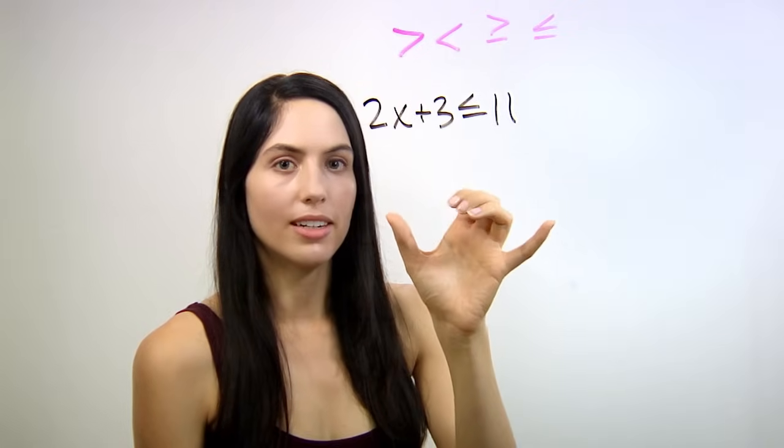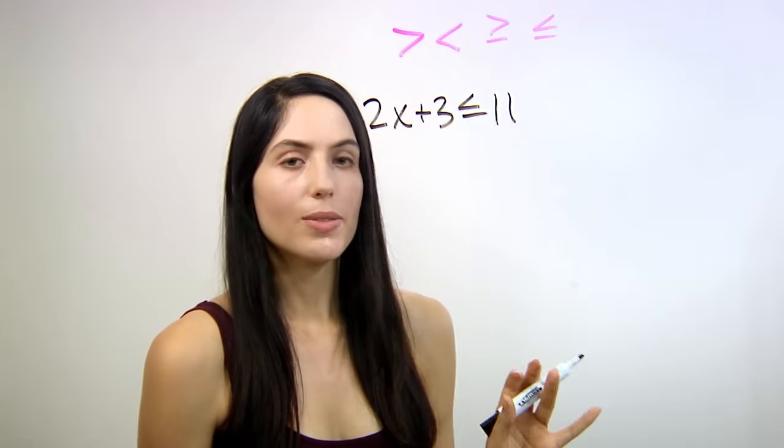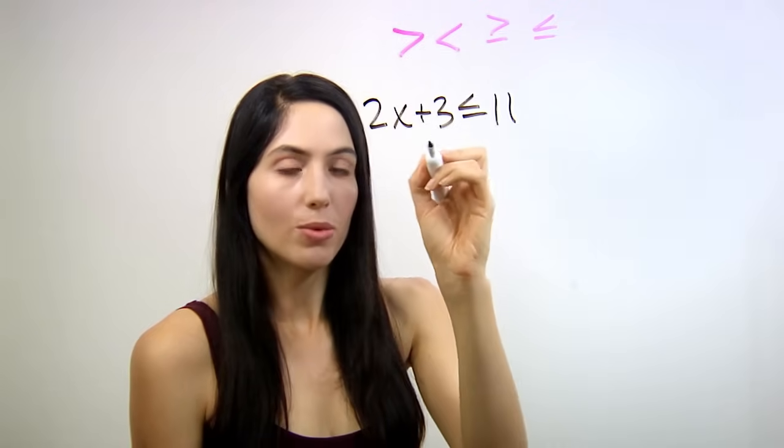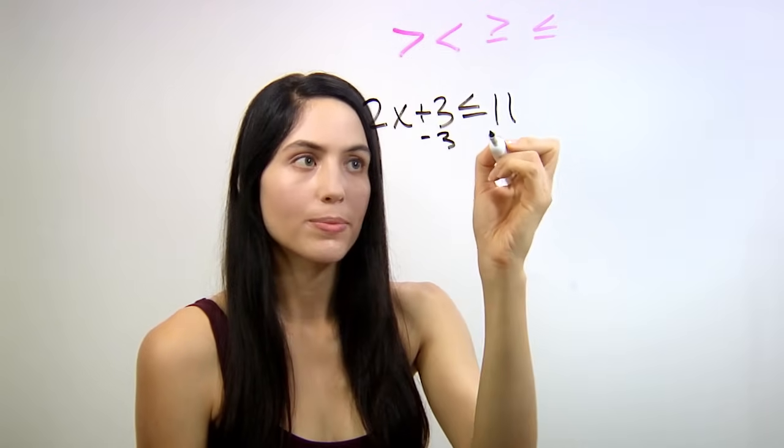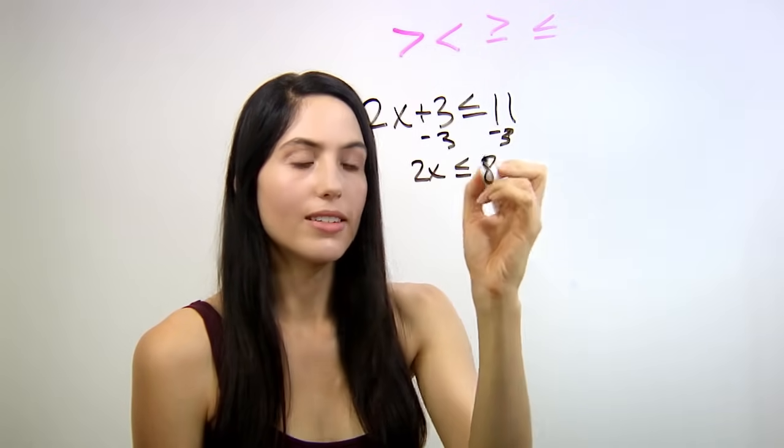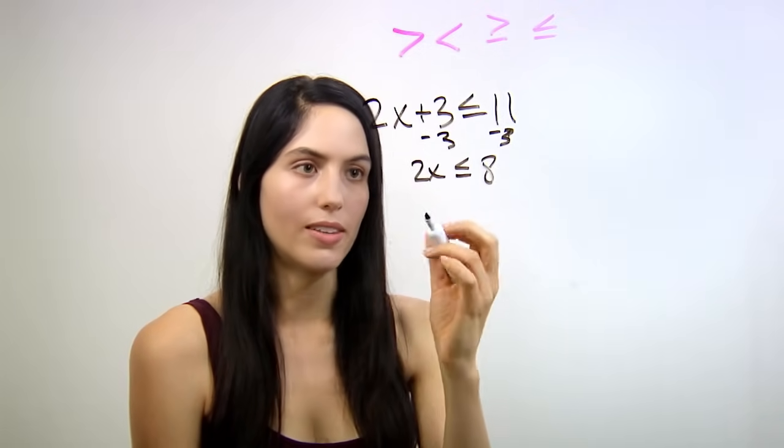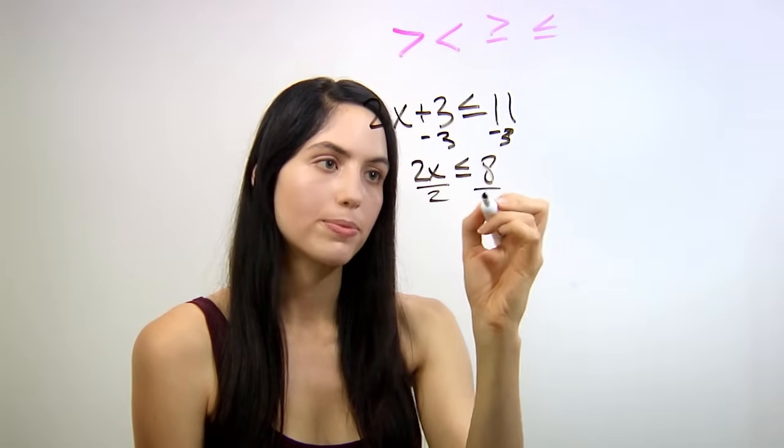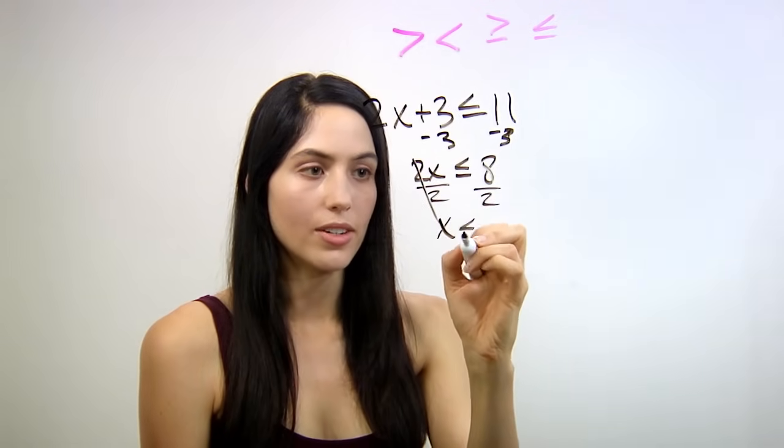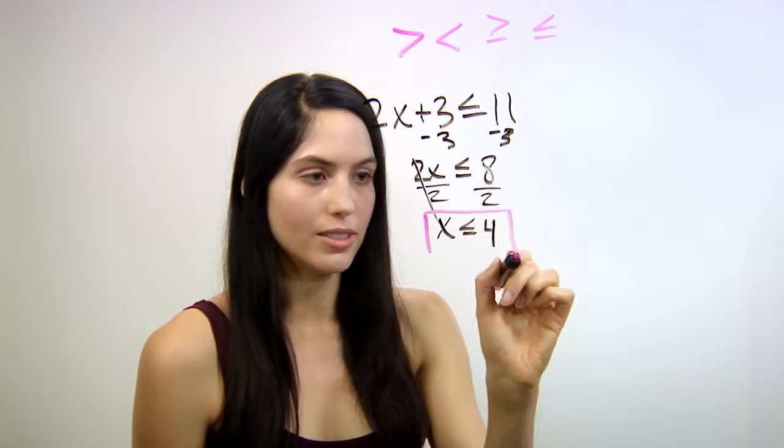Here's a simple linear inequality example: 2x plus 3 is less than or equal to 11. For this one, you're going to solve it as you would an equality, a normal equation. Subtract 3 from both sides, so you have 2x is less than or equal to 8. Divide both sides by 2 so that you have x alone on the left side. And you get x is less than or equal to 4. And that's your answer for that simple inequality.